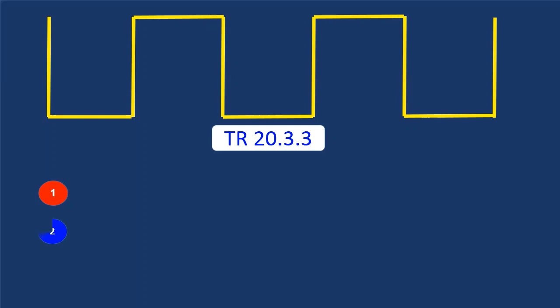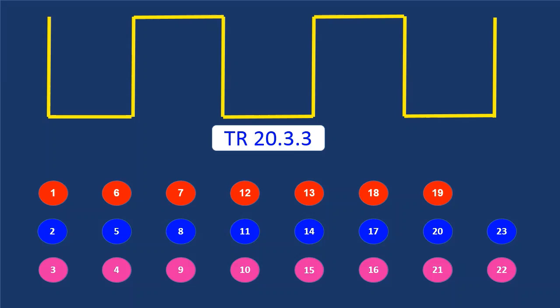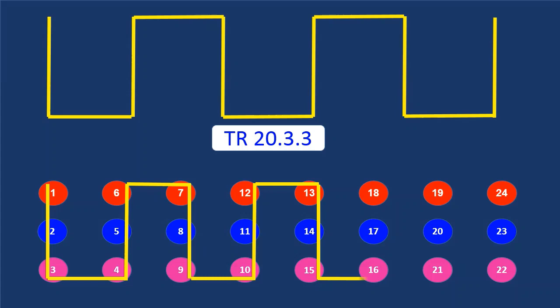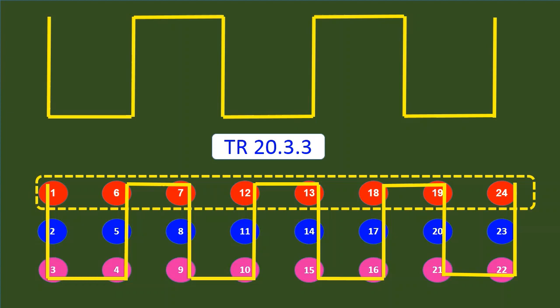This is the procedure of rank seeding in each heat. Ranked 1, 6, 7, 12, 13, 18, 19, and 24 will run in one heat.